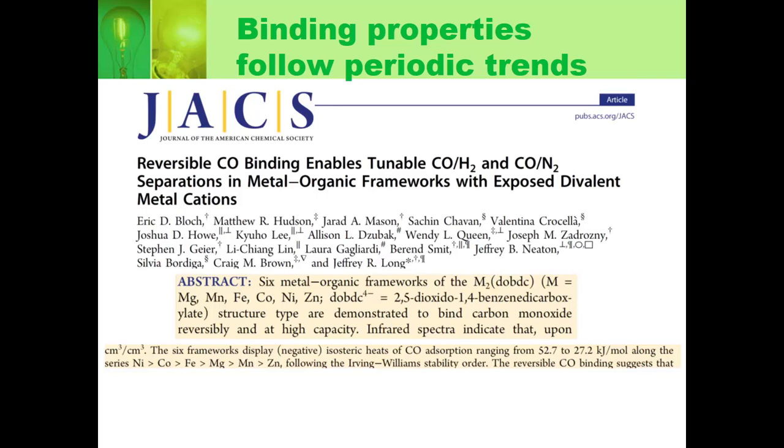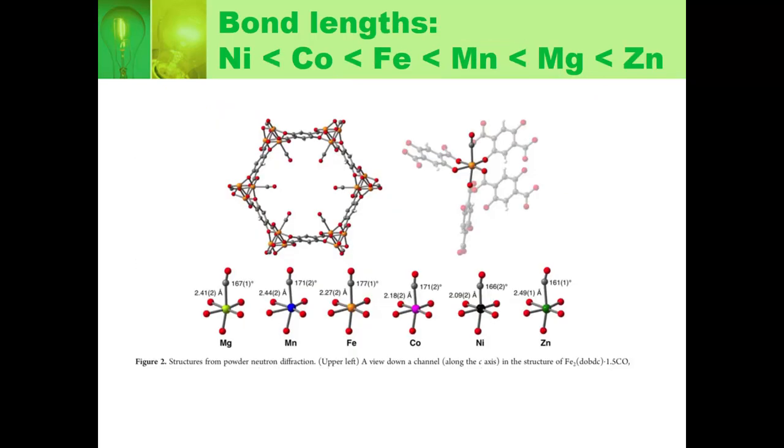You can still see that trend. Here's a trend for a specific case where you have carbon monoxide, CO, binding to transition metals. It turns out that this is in a metal-organic framework, which is like a claw that holds the metal in place and lets the CO come in and bind the metal. The main thing that's happening is you have the CO coming in and binding a divalent metal cation. It's a lot like what goes on in hemoglobin.